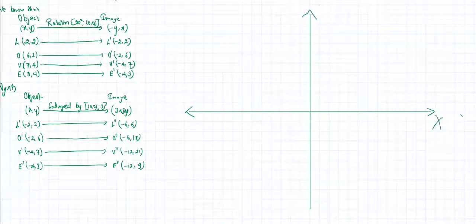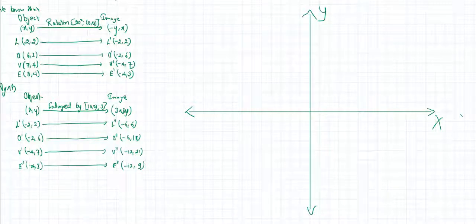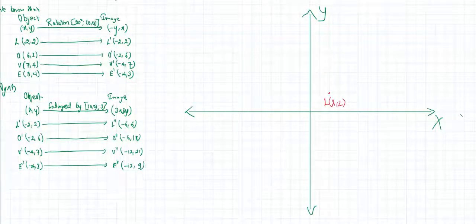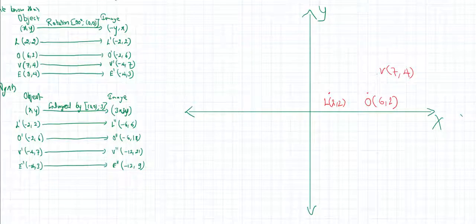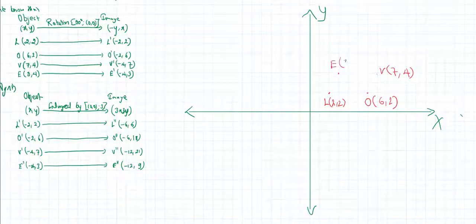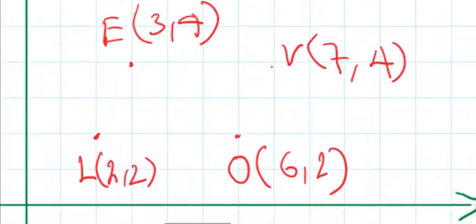So first of all, draw on x-axis and y-axis. Draw the object. The given coordinates: L is 2 comma 2, O is 6 comma 2, V is 7 comma 4, and E is 3 comma 4. So plot these points on the graph.